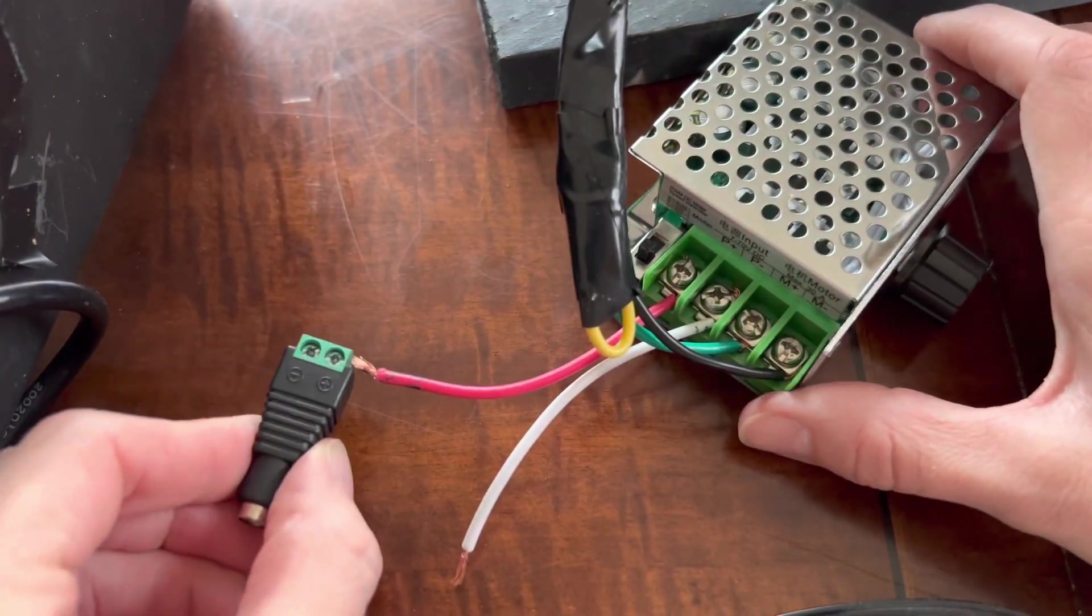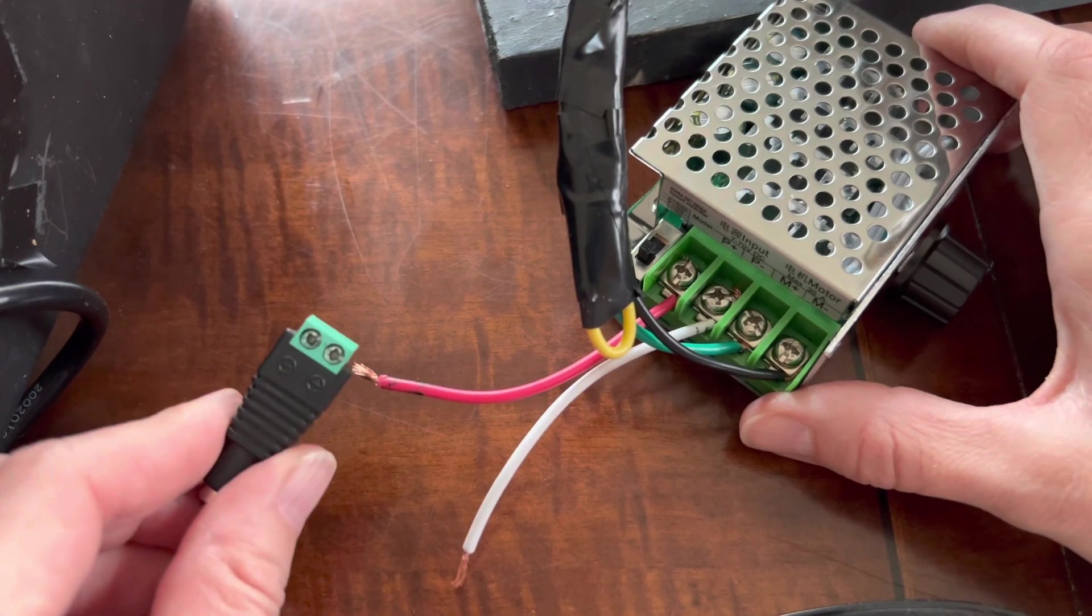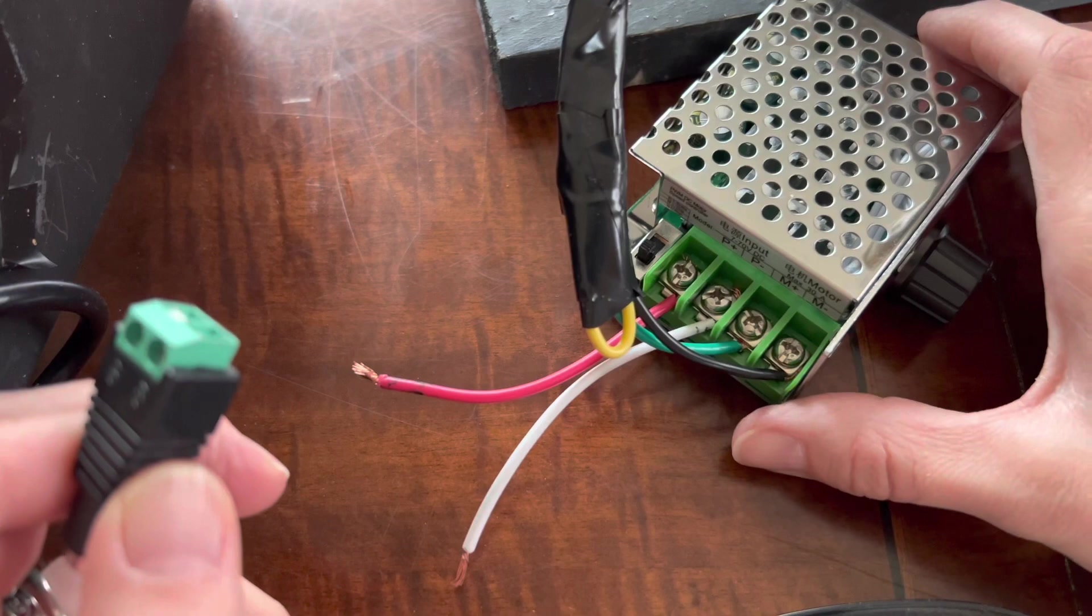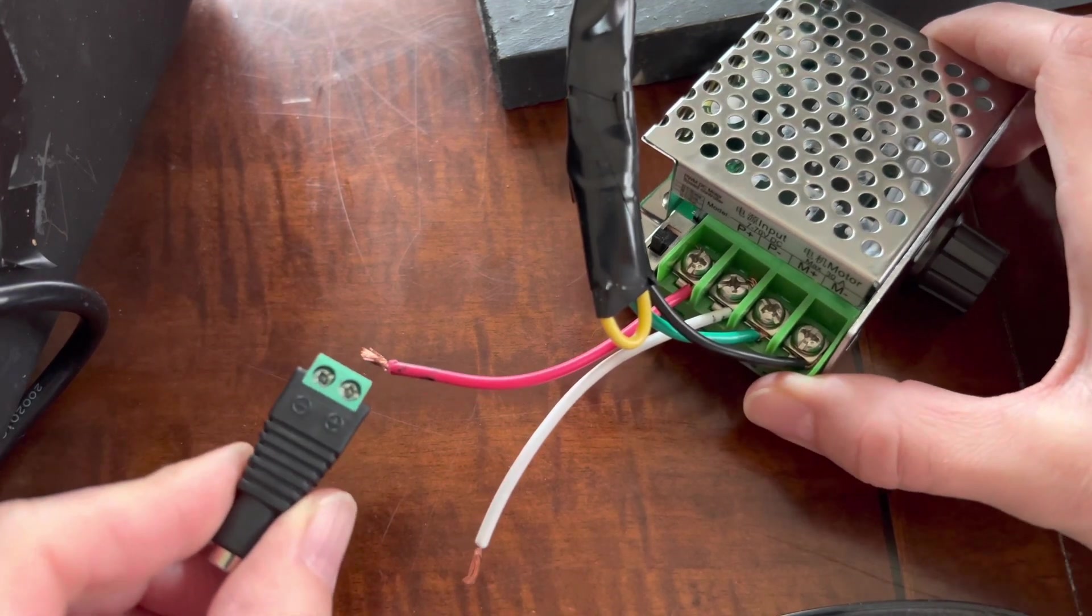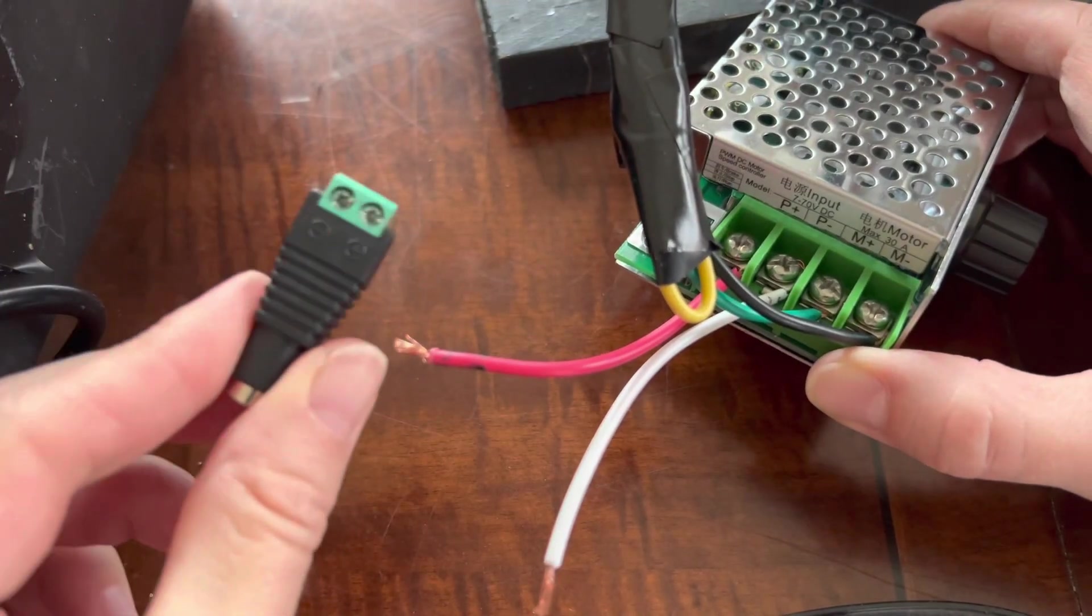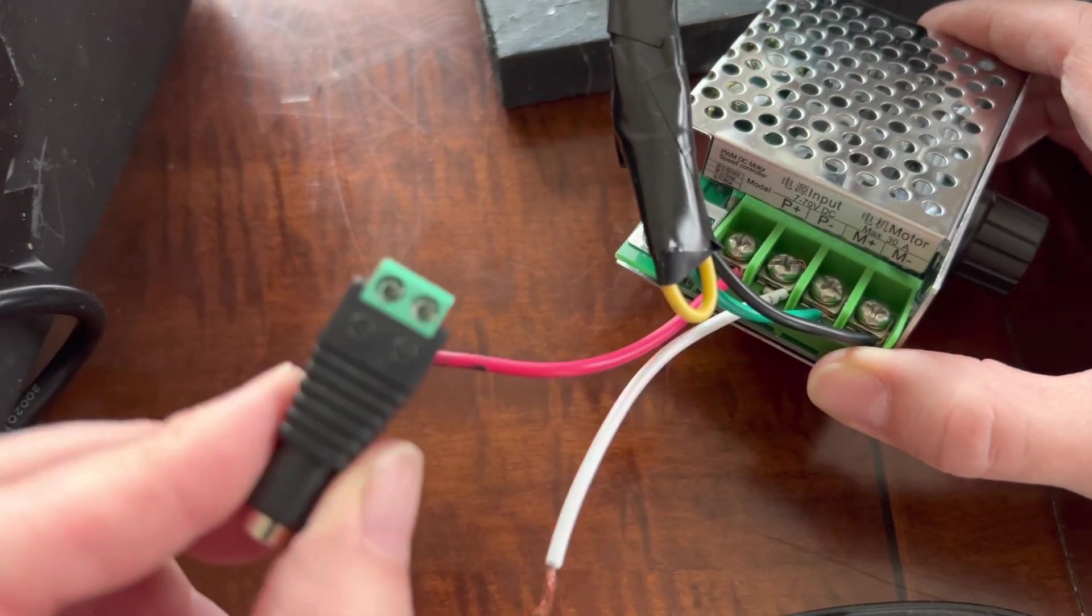Next up, we're going to connect these two loose ends to the female adapter. Now, because we didn't really care which color were positive and negative, the only thing you'll want to make sure you do is match the P positive to the positive on the female adapter and the negative to the negative.